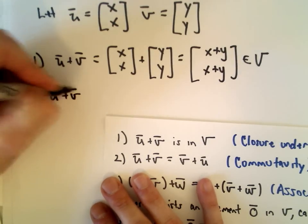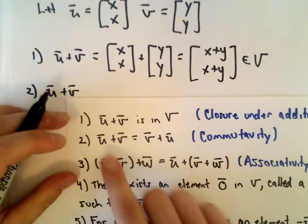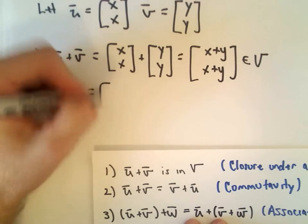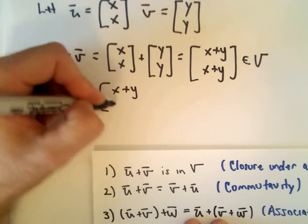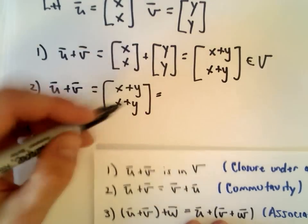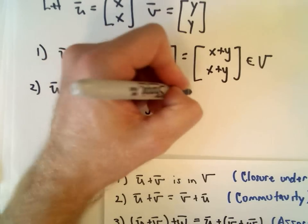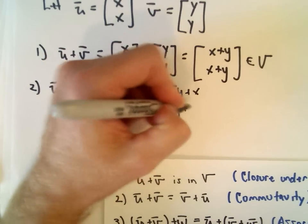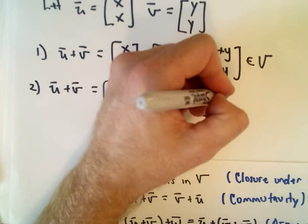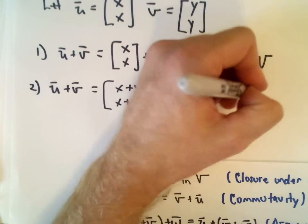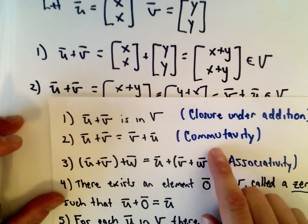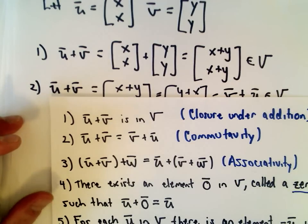The next property is also easy: does u + v equal v + u? We just saw that u + v gives us (x+y, x+y). We can always reverse that to make it (y+x, y+x), which is the same thing as v + u, and again that's in the vector space. No problems there.